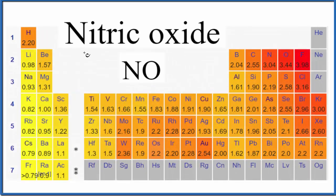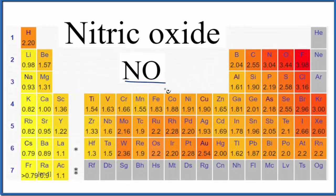Let's take a look at whether nitric oxide, that's NO, is polar or nonpolar. So if we look at the periodic table, we have the electronegativity values here. Nitrogen, that's 3.04. Right next to it, oxygen, 3.44.